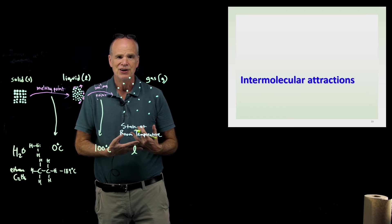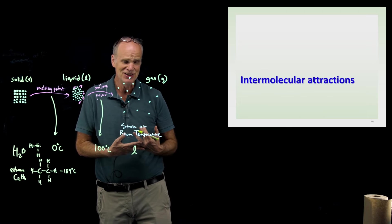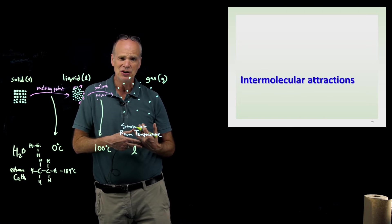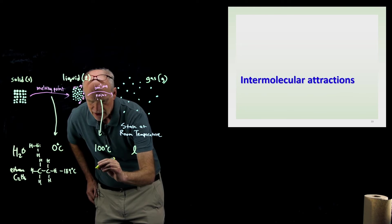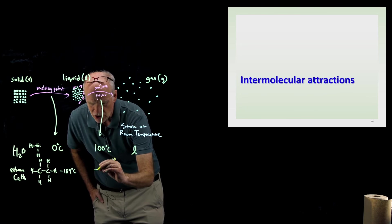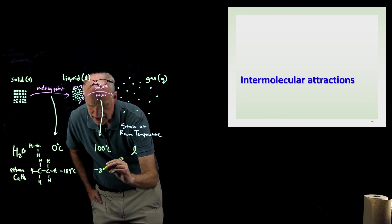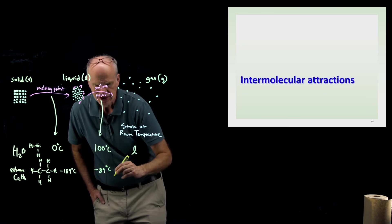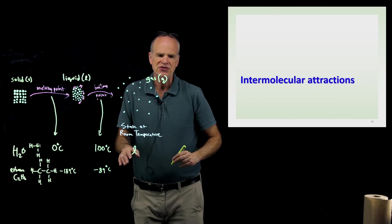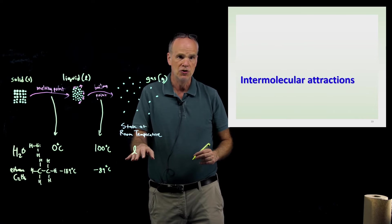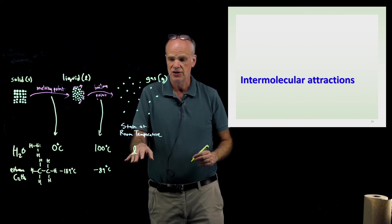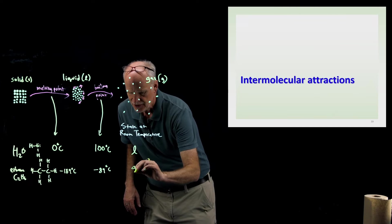At what temperature does ethane boil? It starts boiling at a relatively cold temperature — well below zero — at negative 89 degrees Celsius. That tells us that ethane at room temperature is going to be a gas.